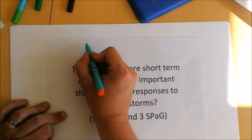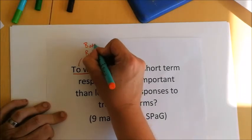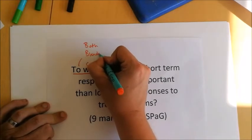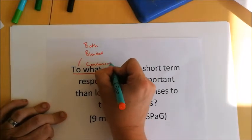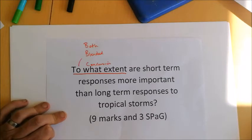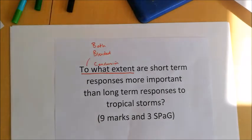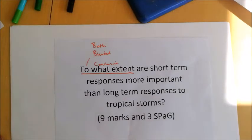At Durrington we use a BBC structure: Both sides, Blended, and a Conclusion. The both-sides argument here is: yes, short-term responses are more important than long-term responses; and no, long-term responses are actually more important than short-term. The conclusion will be your own opinion. The blended element means the arguments come together rather than doing one whole paragraph on short-term and then one on long-term — we mix and switch between arguments.